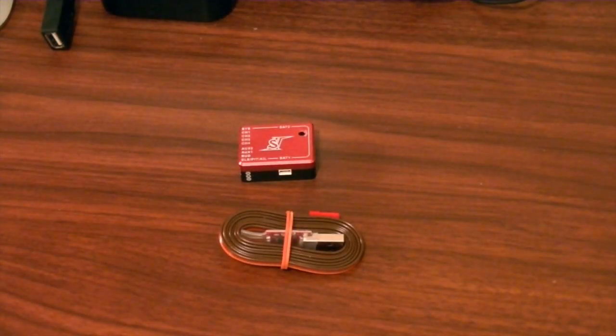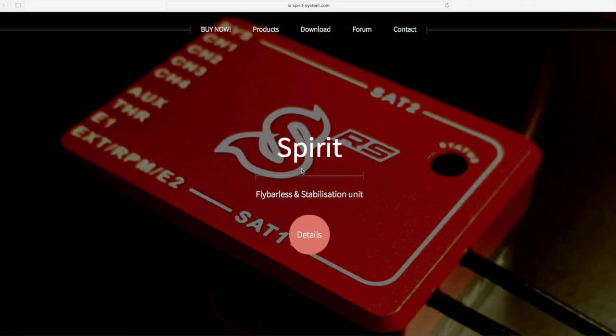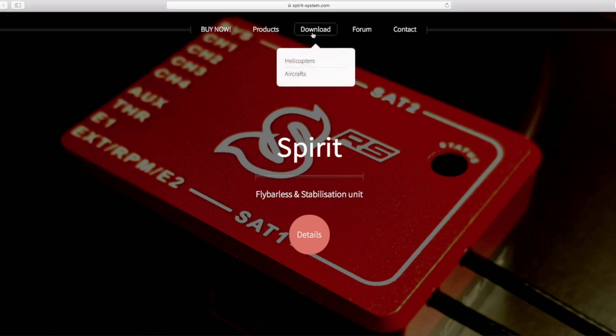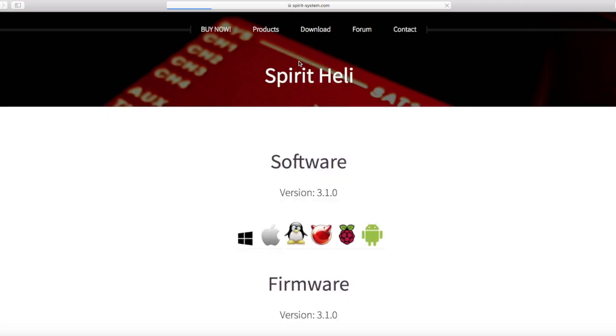Okay you guys, so jumping over to the very first step that I'd like to do before I install the system into my machine is I want to go through, make sure it's up to date. I just felt like this was a little bit easier for me to do, and also it gives me time to download the software and everything. So you can see here on the screen that I've went to spirit-system.com. It's going to be their website. And what we'll do is we will jump over here to the downloads tab and we'll go into helicopters.